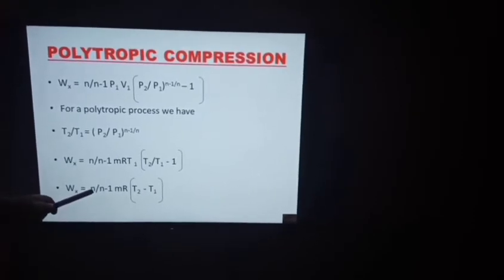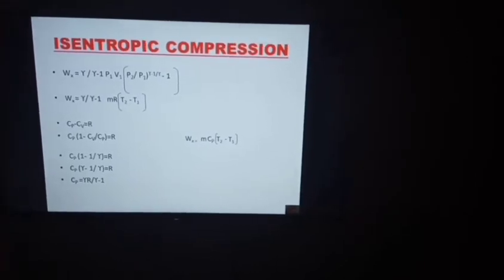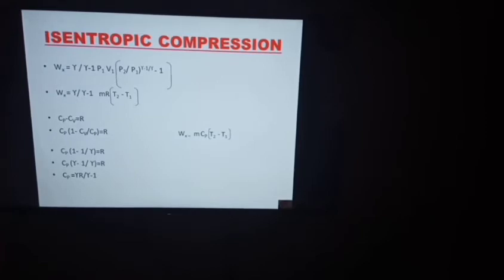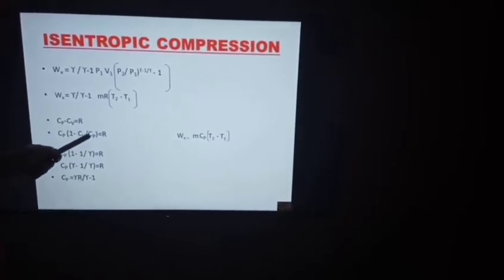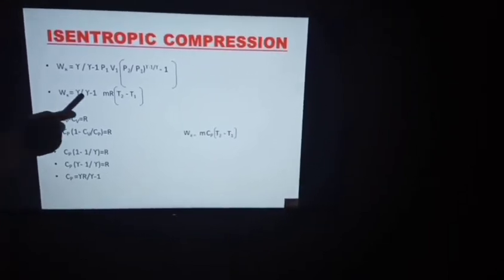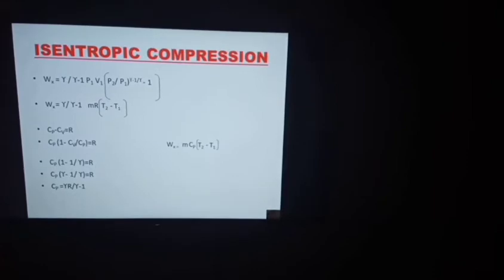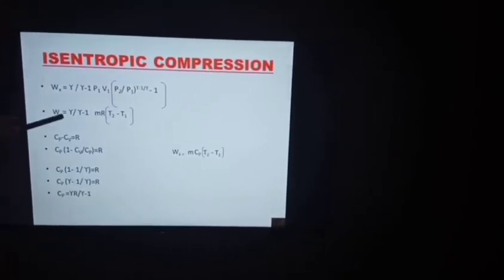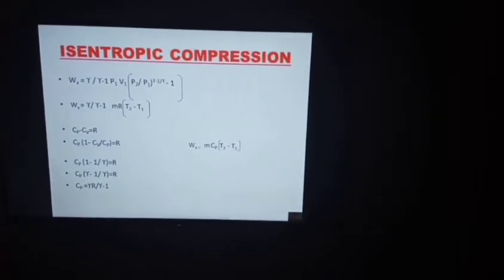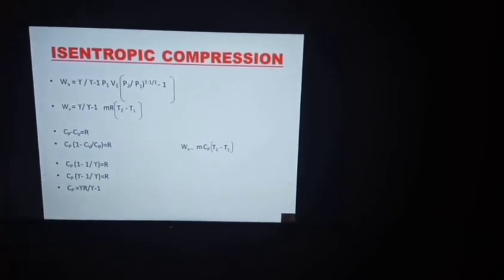Similarly, replacing N with gamma in the second form gives W = −[γ/(γ−1)] × MR(T2 − T1). Using the relationship Cp − Cv = R and Cp/Cv = γ, we find that R equals Cp times (γ−1)/γ, so γ/(γ−1) times R equals Cp. Substituting, the equation becomes W = −MCp(T2 − T1). So for isentropic compression there are three equations: the two obtained by replacing N with gamma, and this simplified form using Cp.